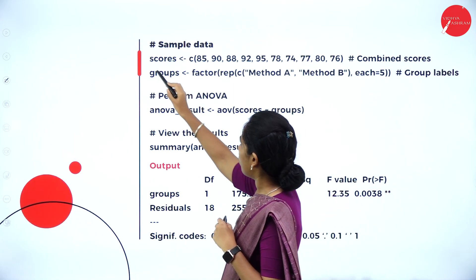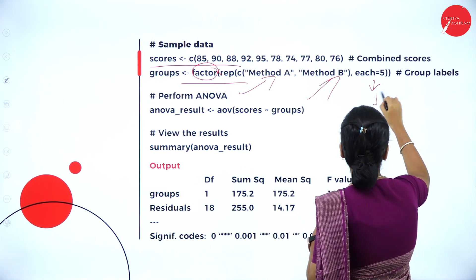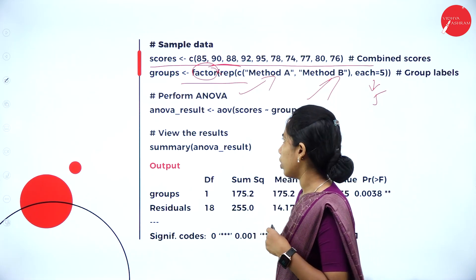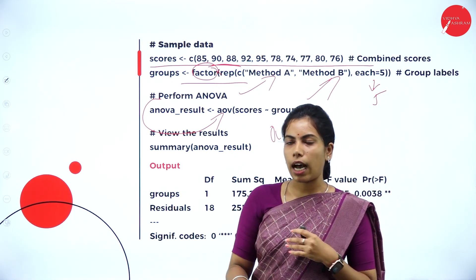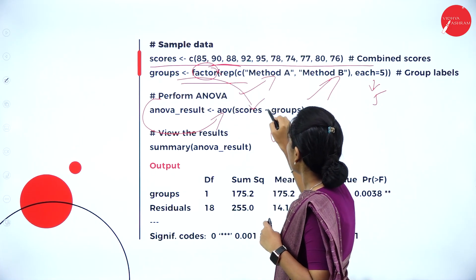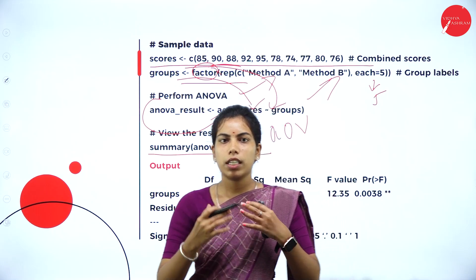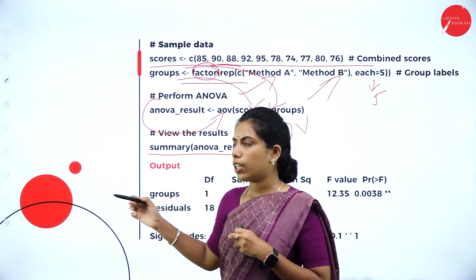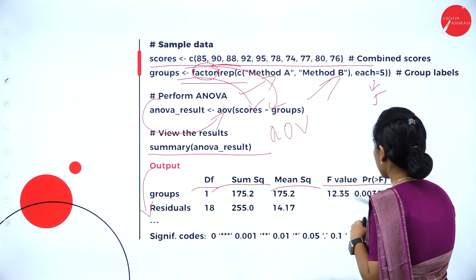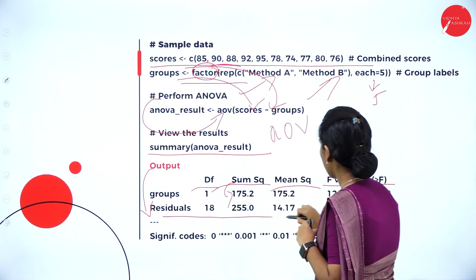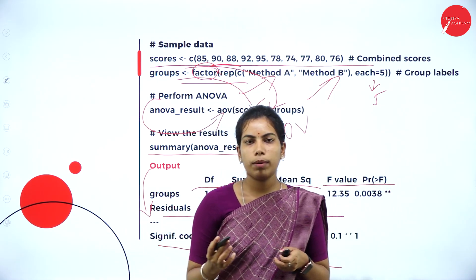Here is an example with scores and groups. For groups, we call the factor function with method A, method B, and each file — along with scores of the students. To perform ANOVA, we use the aov() function — the inbuilt function provided by R. We pass scores and groups to it. Finally, we use the summary() function to summarize the result. The output data frame shows sum of squares (175), residuals (47), mean square, F-statistic, and a significance code of 0.005. This is how the ANOVA test works. Thank you.